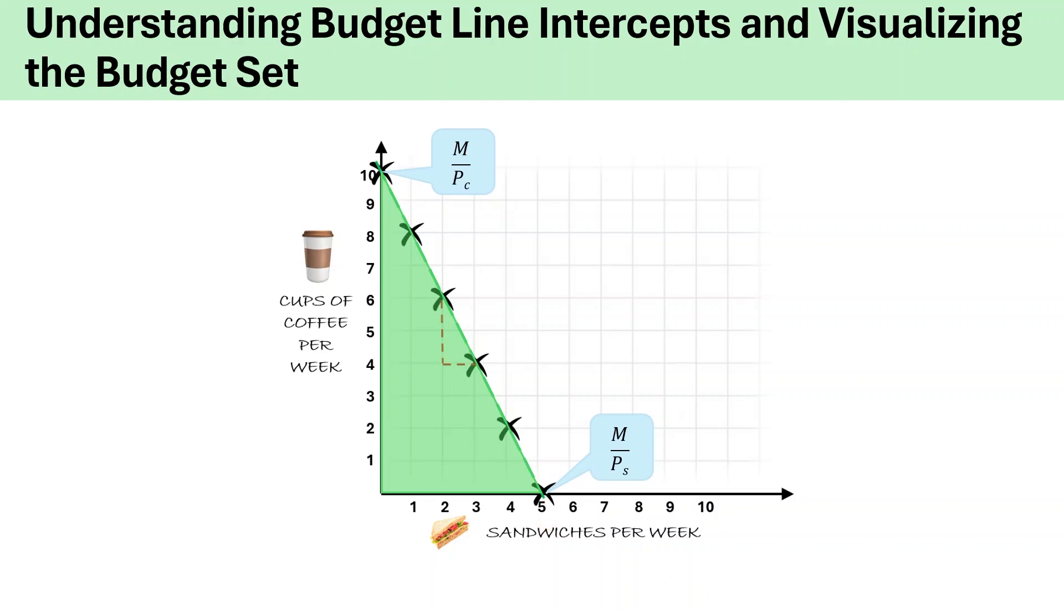On the other hand, if the entire budget is spent on coffee, he can buy 10 cups of coffee as each cup costs $2. We can represent these intercepts as M divided by Ps, which means total $20 divided by price of sandwich on x-axis.